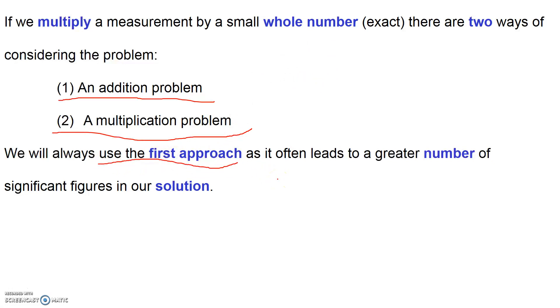The important thing to recognize is that we always use the first approach. That is, we consider that when we have a measured value and we want to multiply it by a small whole number, we're going to consider it to be an addition problem, and then that way we will always end up with the correct number of significant figures in our solution.